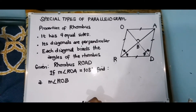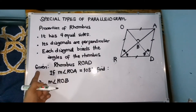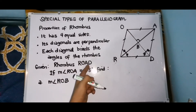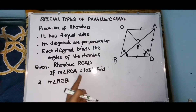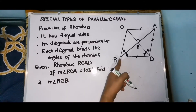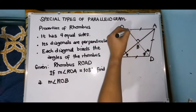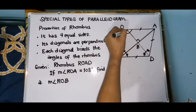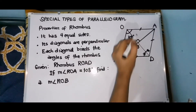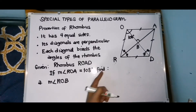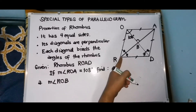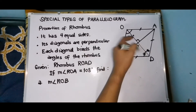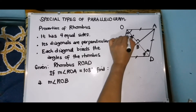So let's have our problem. Given rhombus ROAD, we're given that the measure of angle ROA is 108 degrees. So eto yung ROA — eto yun. So find the measurement of angle ROB — ang hahanapin natin yung measurement angle ROB. So eto yung nawawala, eto yung measurement na to.